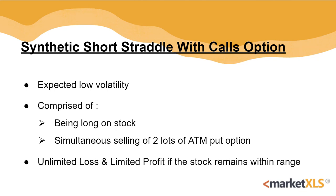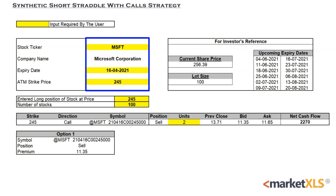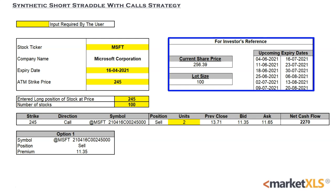MarketXLS offers a template for this strategy. Here's an introduction page of the template and here's the active template. The yellow cells have to be inputted by the user — the stock ticker, expiry date, ATM strike price, the price at which the user entered the short position of the stock, and the number of stocks for which the long position was taken. Some upcoming expiry dates, the current share price, and lot size are available for the investor's reference on the right.